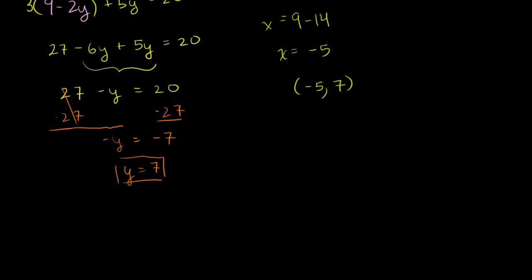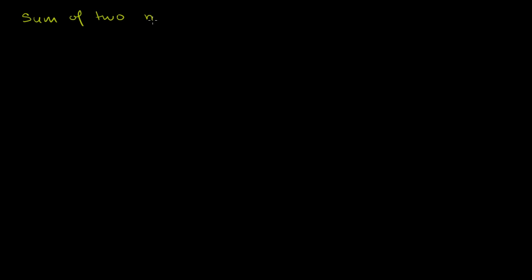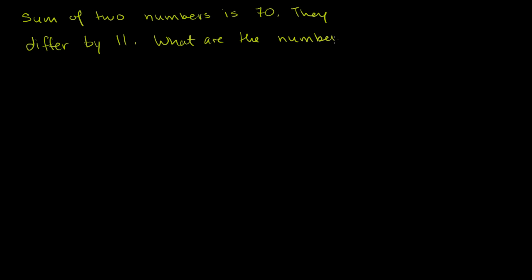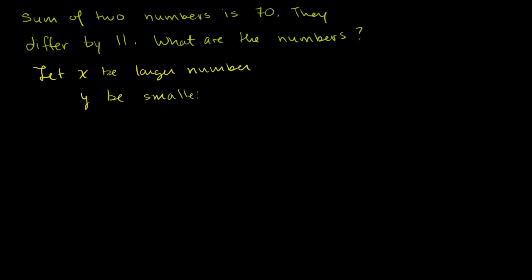Now let's use our newly found skill to do an actual word problem. They tell us that the sum of two numbers is 70, and they differ by 11. What are the numbers? Let's define some variables: let x be the larger number and y be the smaller number.